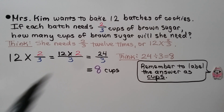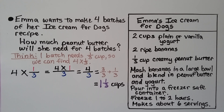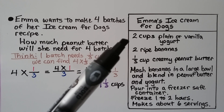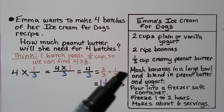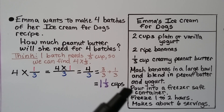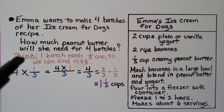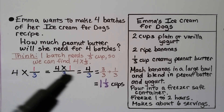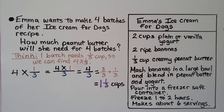For fractions greater than 1, we can think of it as a division problem: 24 divided by 3. Emma wants to make 4 batches of her ice cream for dogs recipe. The recipe calls for 1 third cup of creamy peanut butter per batch. So we find 4 times 1 third: 4 whole times 1 for our numerator is 4, we slide across the denominator, we have 4 thirds. That's 3 thirds plus 1 third — which is 1 and 1 third cups of creamy peanut butter.